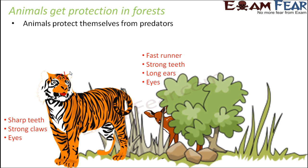Looking at the eyes of the deer, they are located on the sides of the face — not in front like the tiger or lion. This location helps the deer look in all directions. With eyes on the sides, the deer can see the entire right-hand side and the entire left-hand side, giving it a much wider field of view.